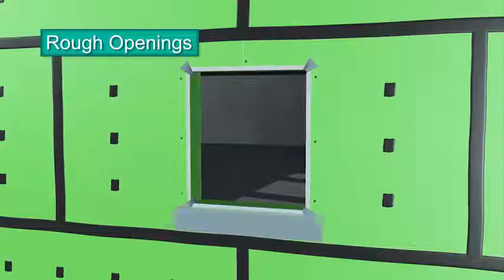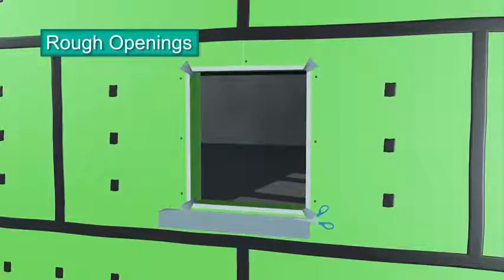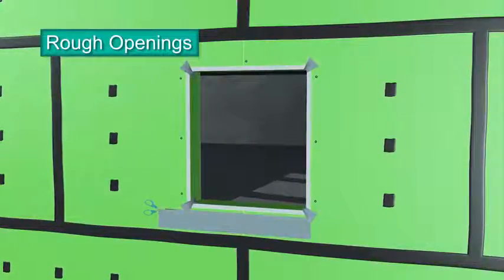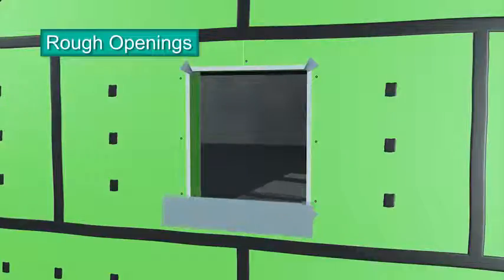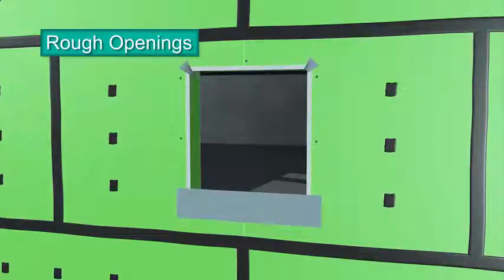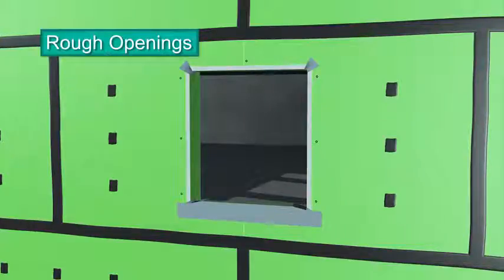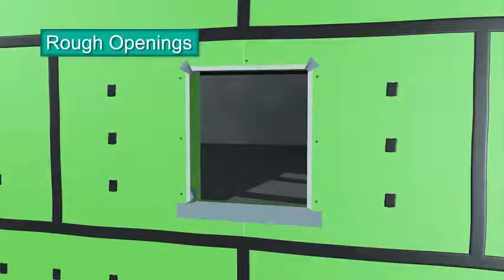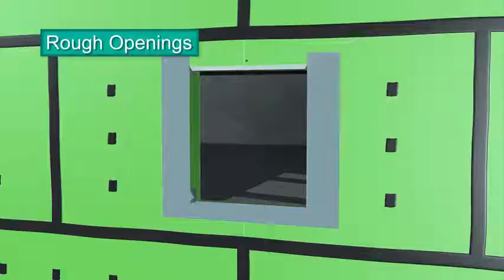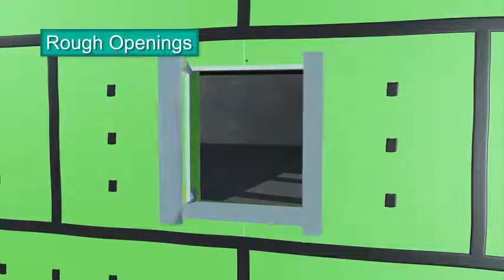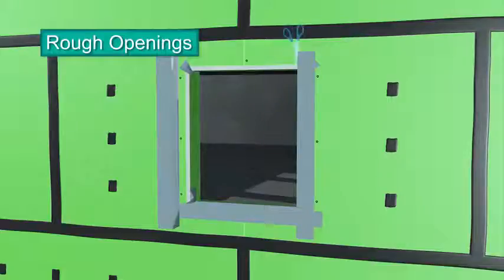Next, cut a strip of ExoAir 111 6 inches longer than the sill. Fold it in half and cut a 3 inch slit on each end along the fold. Remove the release liner and position half the strip on the sill while folding down the other half onto the face of the exterior sheathing. Press the inside cut edges up onto each jamb. In the same manner, cut two strips of ExoAir 111 6 inches longer than the height of the jams.